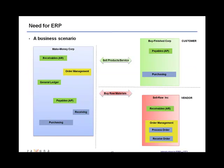So now here in this business scenario we have the entity the Make Money Corp, the vendor which is Sell Raw Ink which sells the raw materials, and the customer which is Buy Finished Car which buys the finished product.